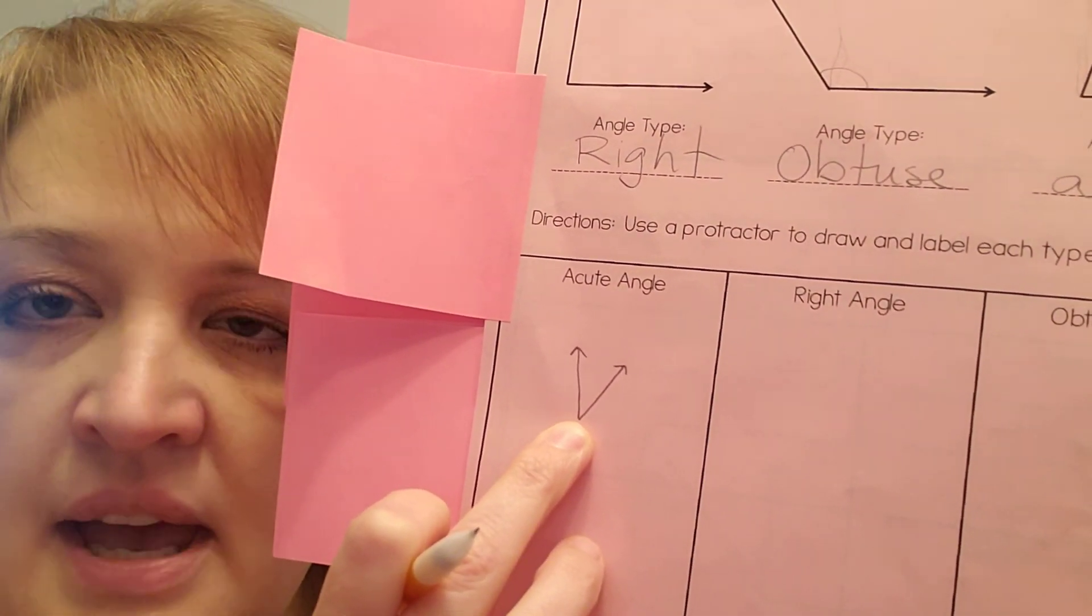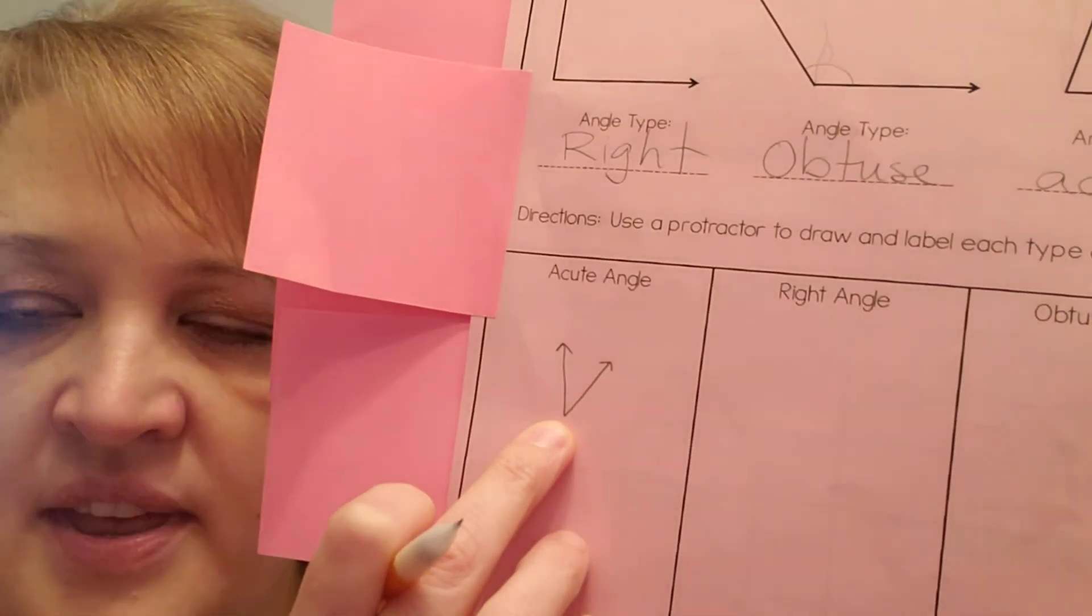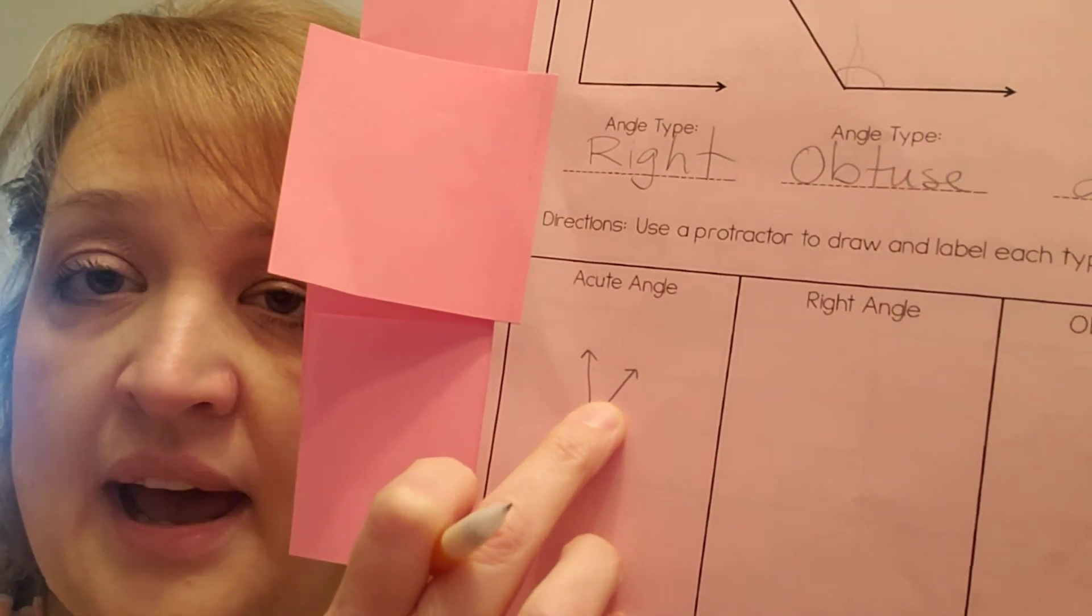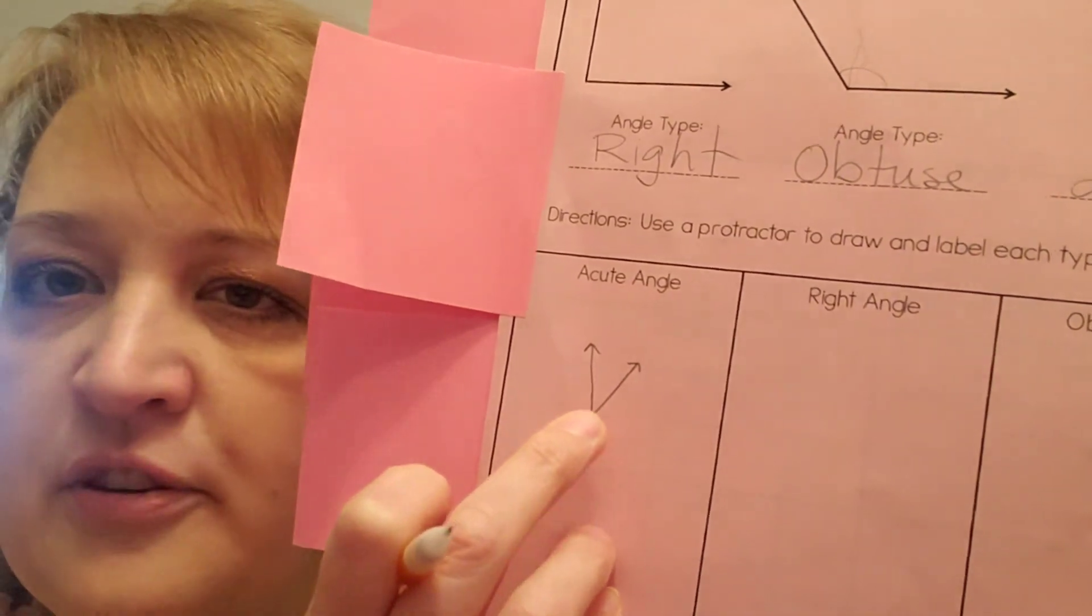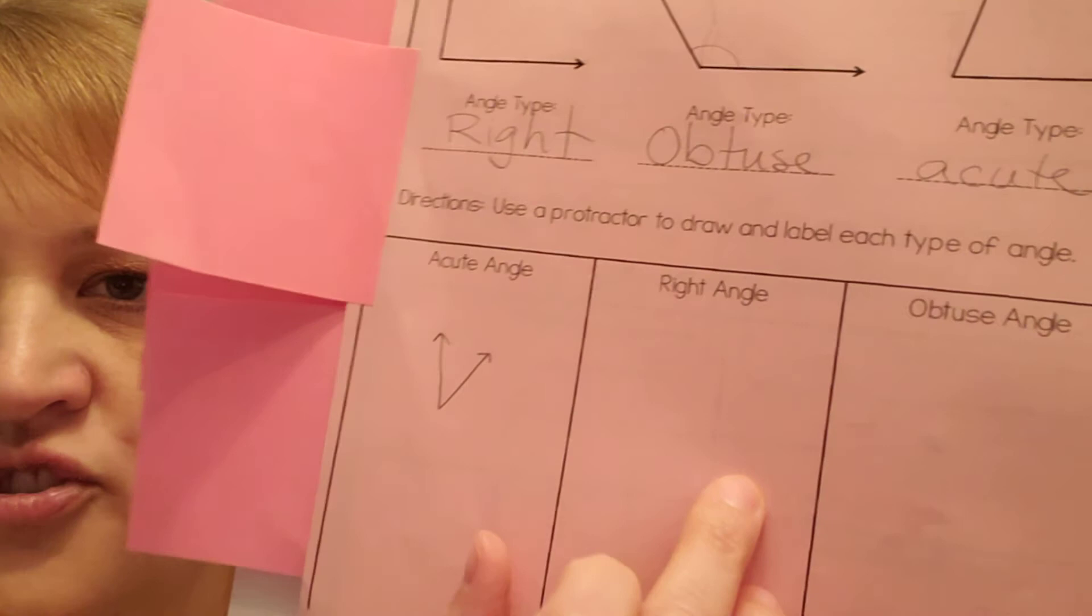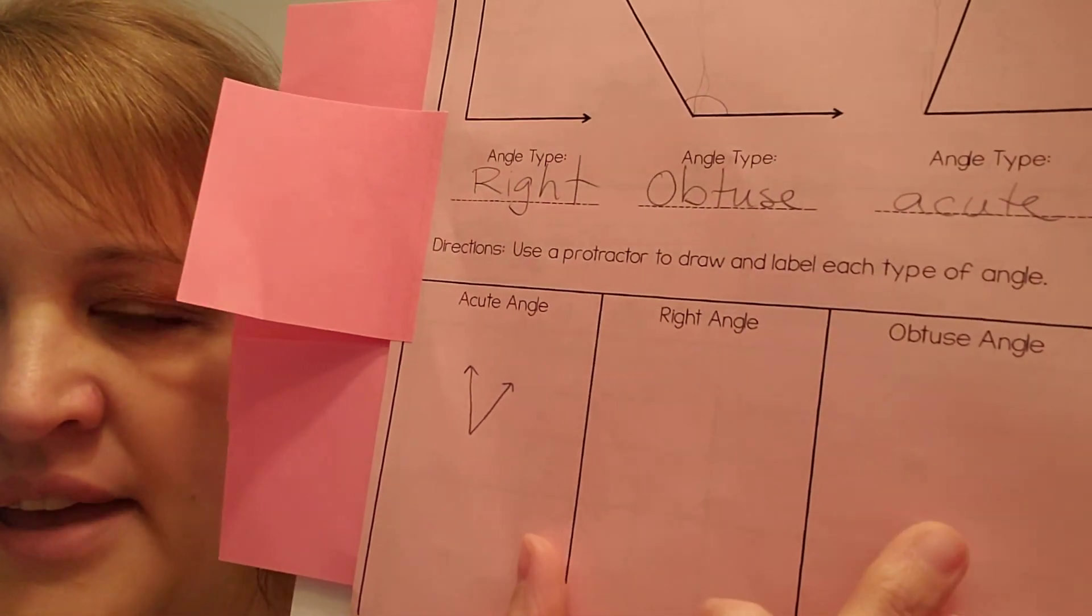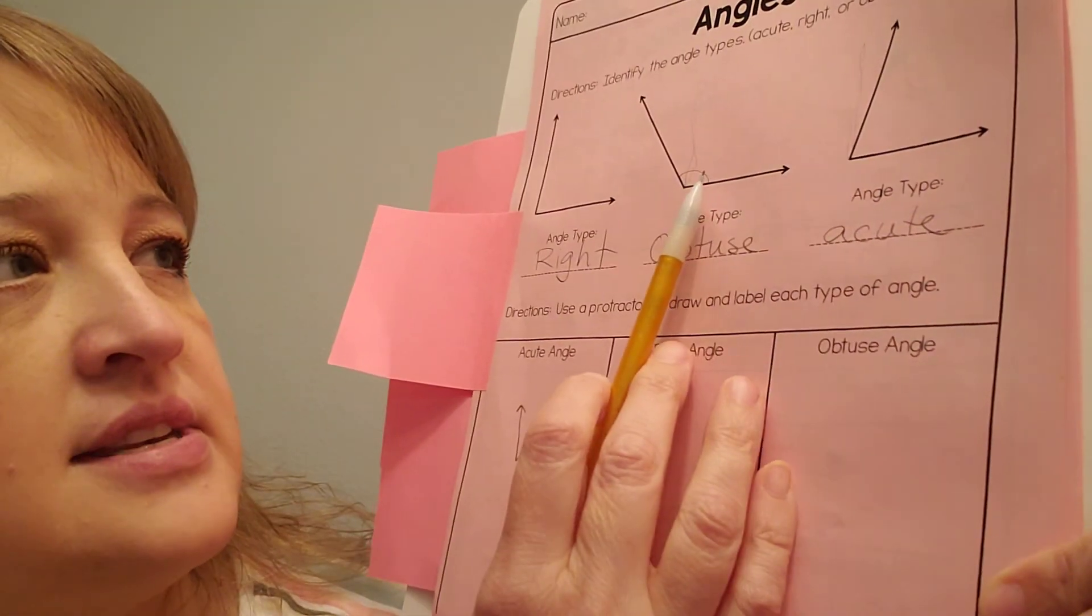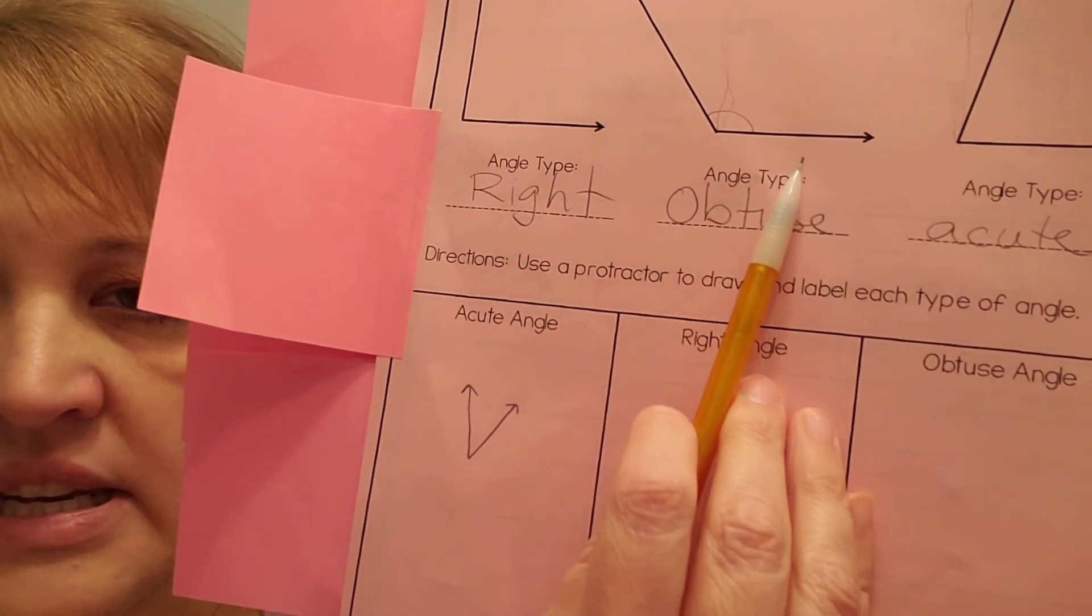Okay. I don't have a protractor to actually draw or measure that. You probably don't either. If you had a protractor, I would want you to put how big this is, like 20 degrees. But if you don't have a protractor, that's okay. Just go ahead and draw it. And then you're going to draw a right angle. Draw it as straight as you can. And then you're going to draw an obtuse angle and make sure that it is above or larger than 90 degrees.